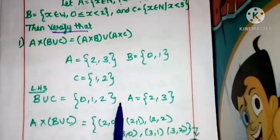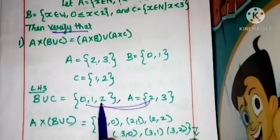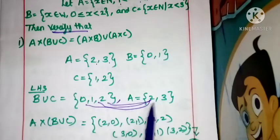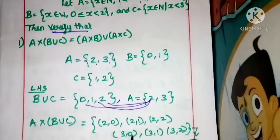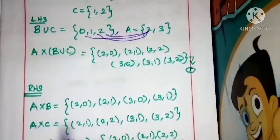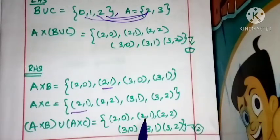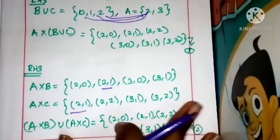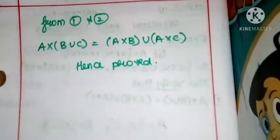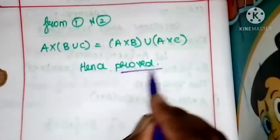A union B is equal to {0, 1, 2, 3, ...}. Combining the elements and removing duplicates, the answer simplifies accordingly. x is equal to 1 as the smallest number.